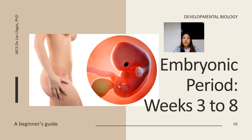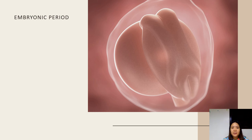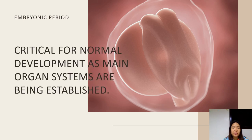The embryonic period is otherwise known as the period of organogenesis, and this occurs from the third week to eight weeks of development. The embryonic period is the time when the stem cell populations start to establish the main organs of the embryo. For this reason, it is considered a critical period for normal development. If anything goes wrong during this period, you could end up with abnormalities or congenital deformities.